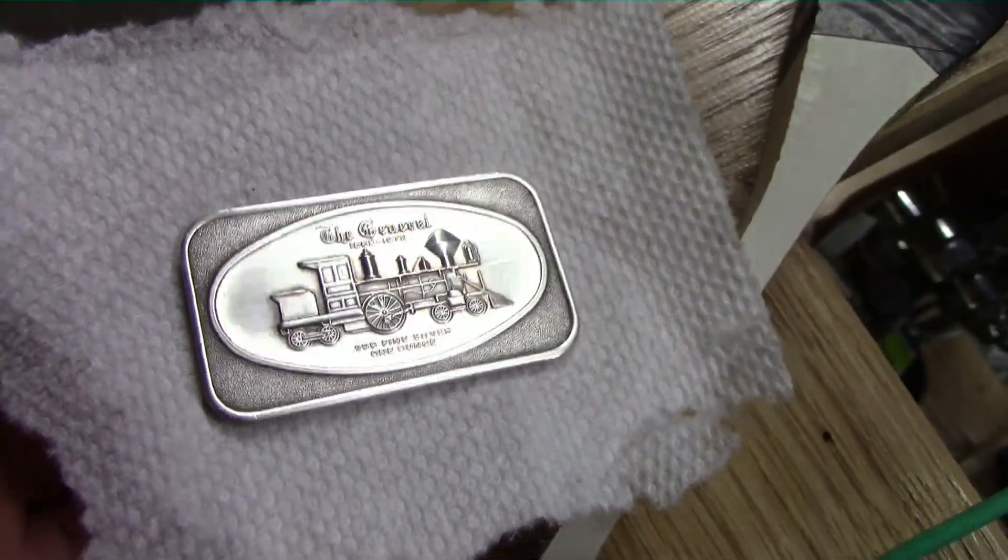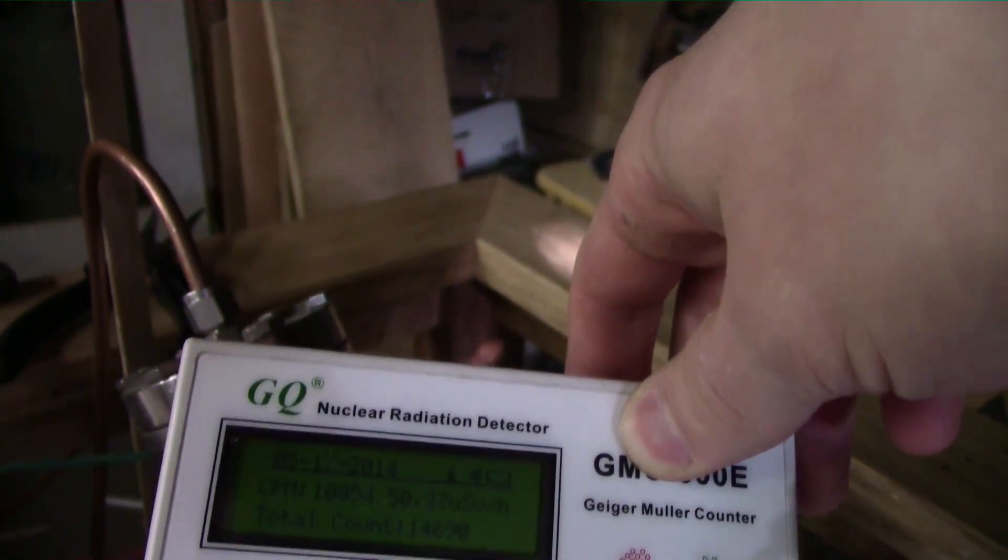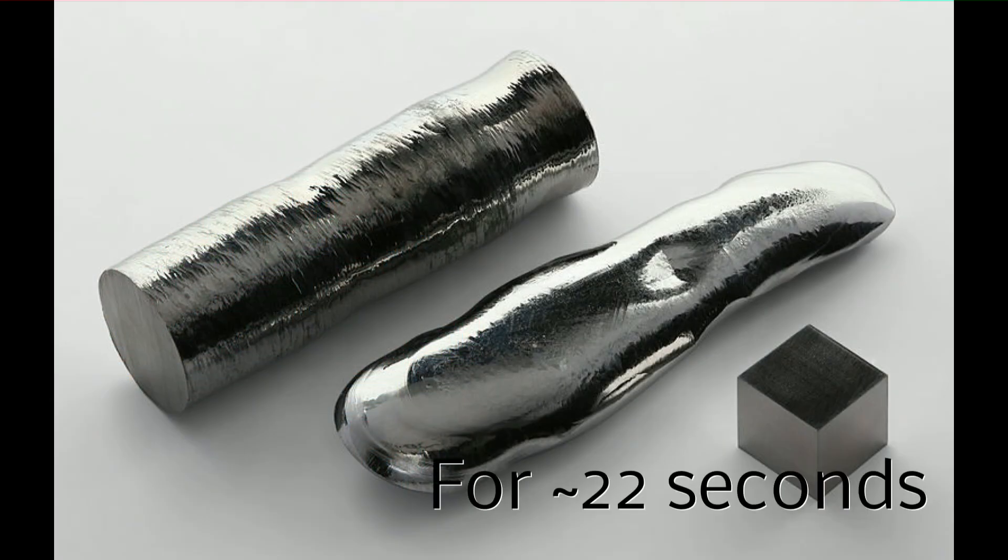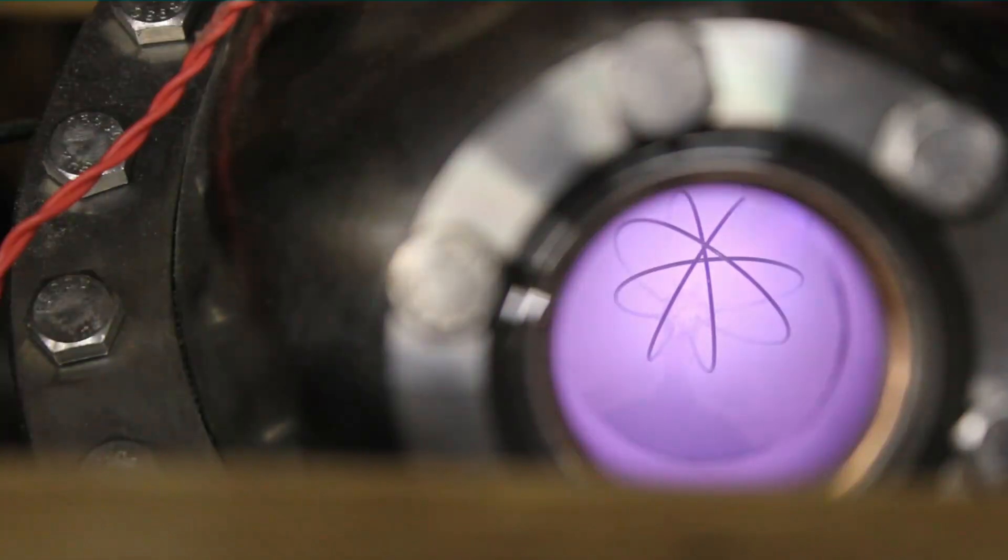To make sure it was really neutron emissions, I put pure silver in front of the window, and when I took it off, it was emitting radiation as some of the freshly generated radioactive silver isotopes decay into cadmium. That pretty much means the reactor works, and really does do fusion.